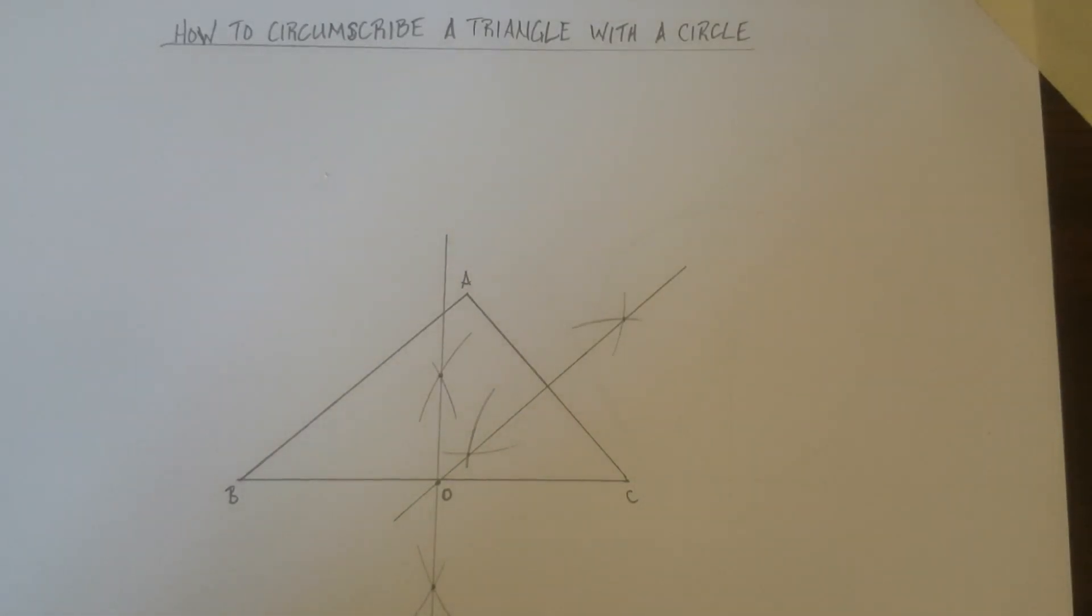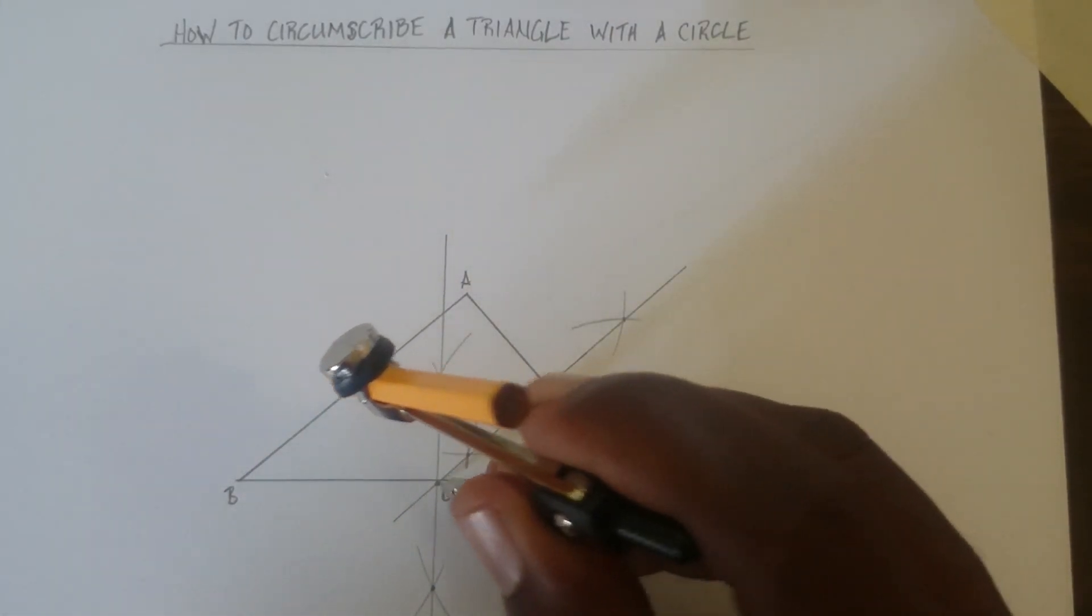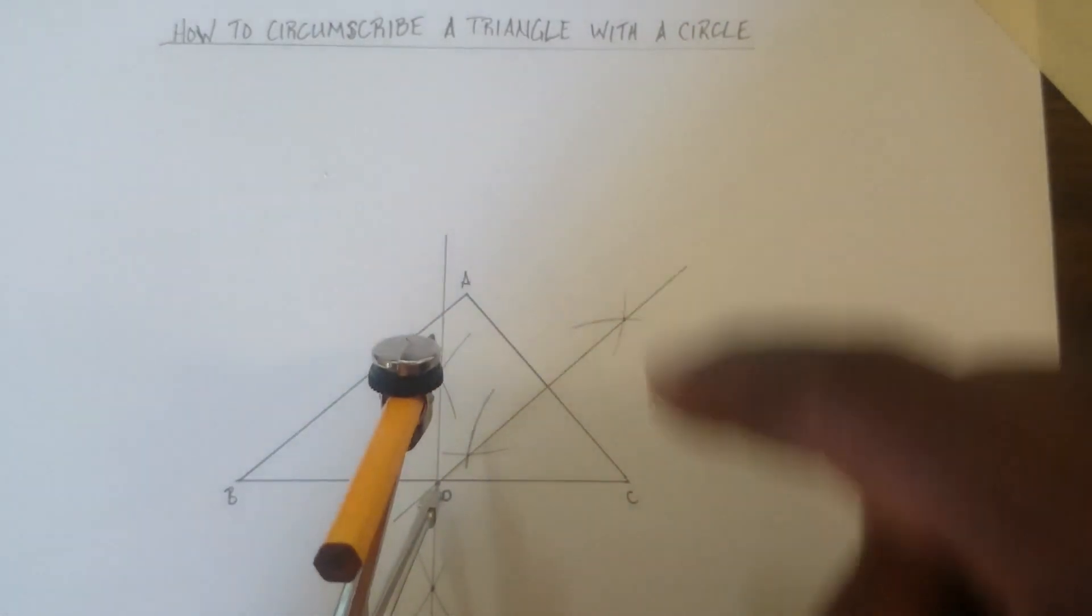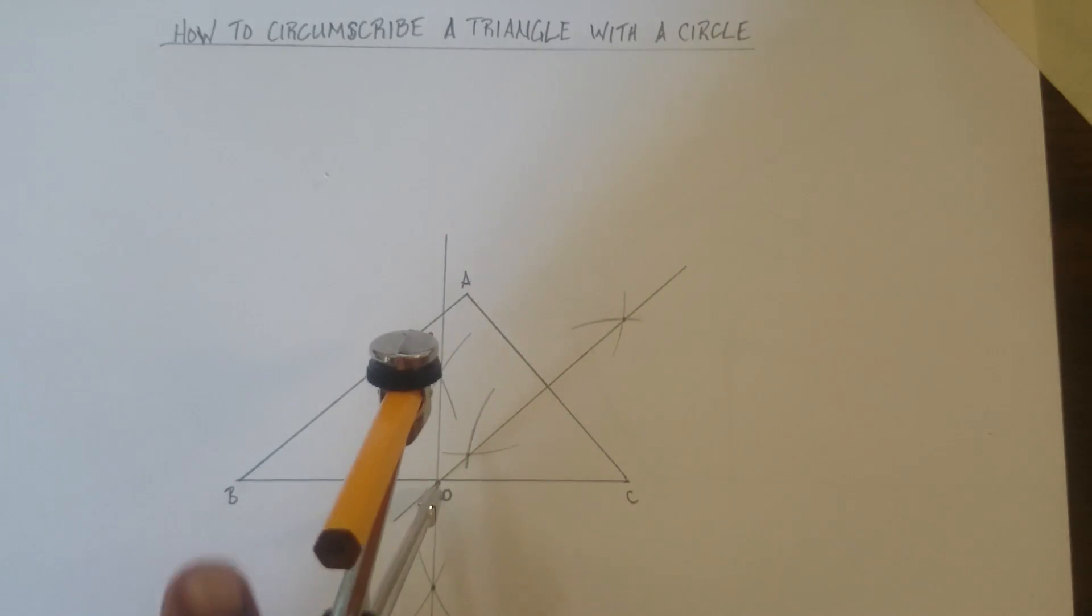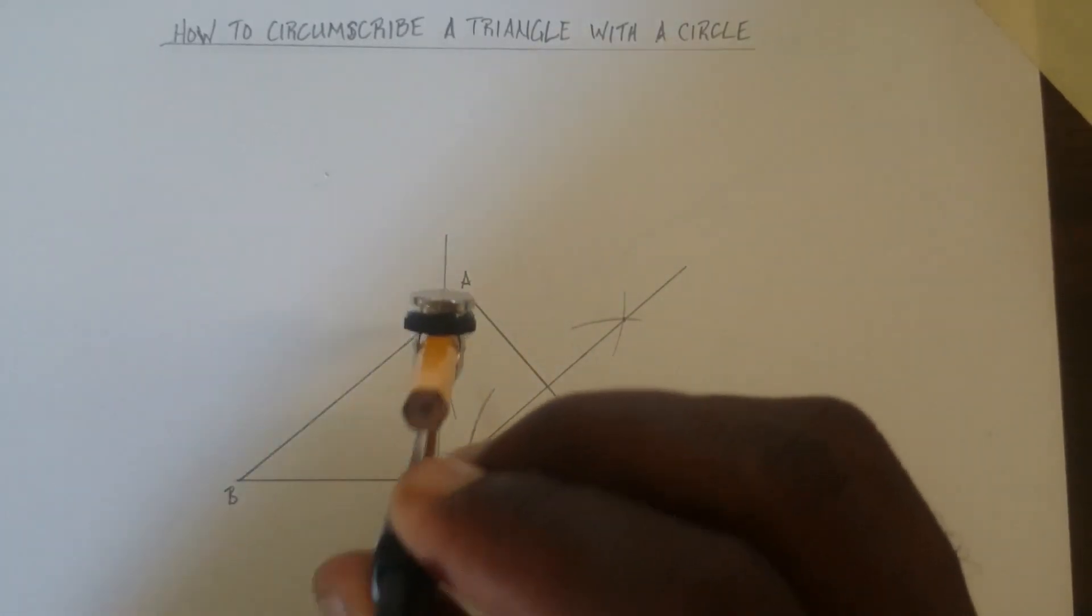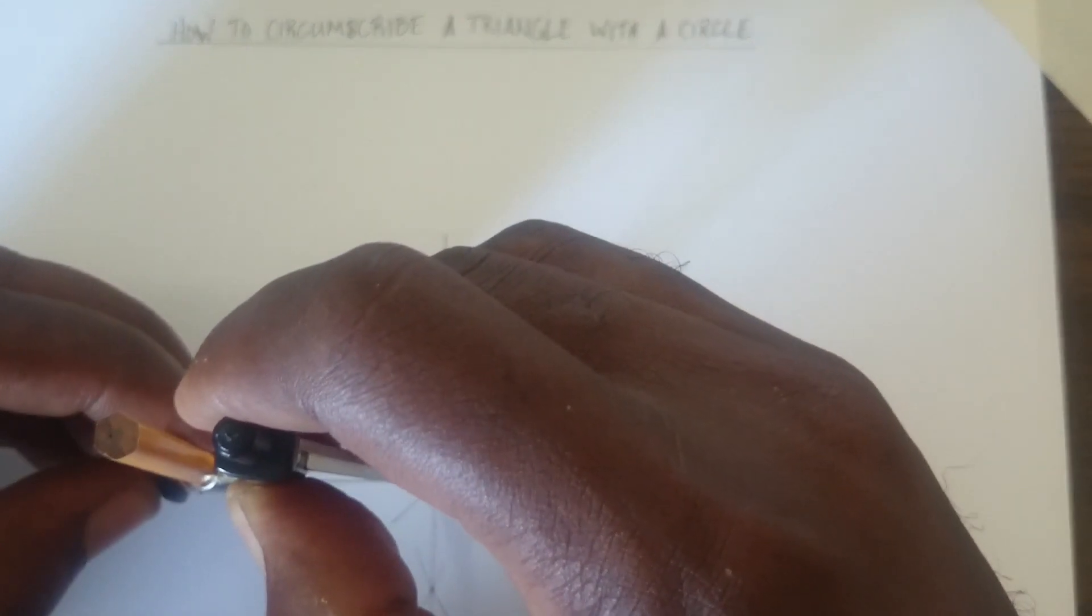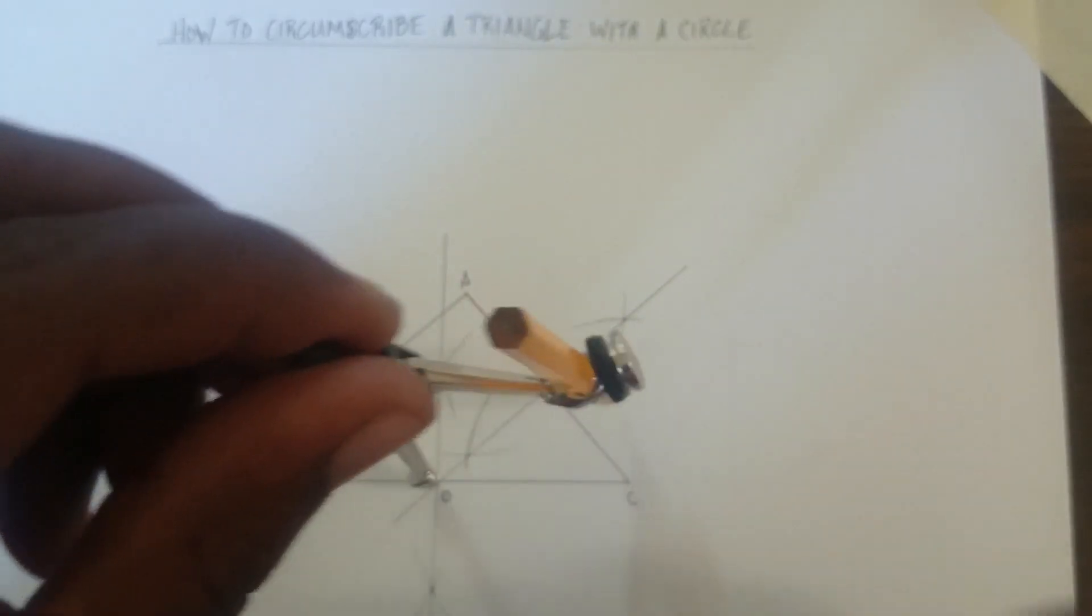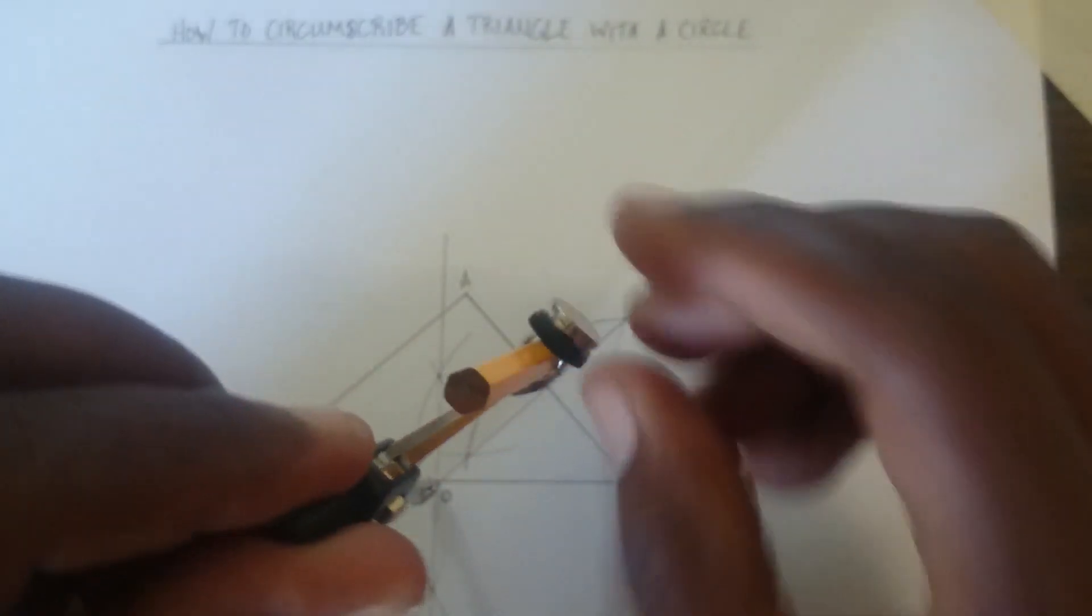And all you have to do now is connect your center point with any of the corners. Because remember, it's circumscribing the triangle, so it will touch C, A, and B. So all you have to do is put it at any one of the corners. We're going to do B, it should touch A, and it should touch C. So let's do that.